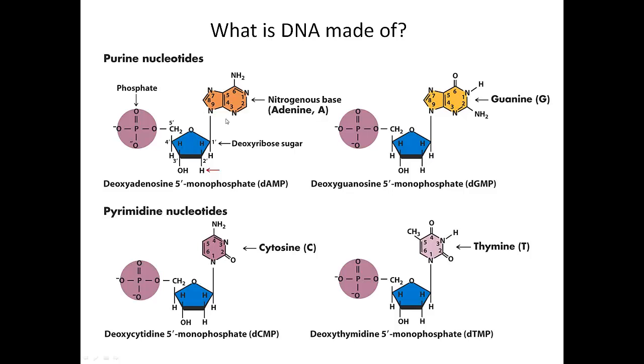The bases are always found attached to the one-prime carbon. Here we have adenine and guanine, which are called purine nucleotides. These bases are double ring nitrogen rings. The pyrimidines only have a single ring, a single nitrogen ring. One way that I remember this is pyrimidines, this word has a Y in it, and you'll notice that the bases with Ys in it, cytosine and thymine, are both also pyrimidines.